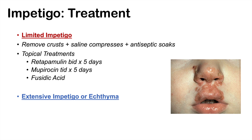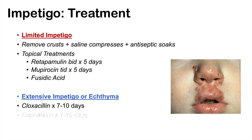For extensive Impetigo or Ecthyma Impetigo, which are more serious conditions, we're going to use oral antibiotics. One option is Cloxacillin for seven to ten days. Another is Cephalexin, which can also be used for about seven to ten days.